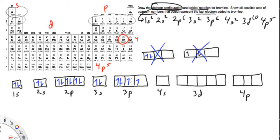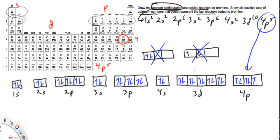Then we're going to go back and completely fill them. 4S gets completely filled because there's not enough energy to kick from 4S over to 3D. Then we fill in 3D — half filled with parallel spin, all going up — and then we fill them with the down arrow. In the case of 4P, we're going to have five electrons. That's going to be five on the fourth level, so 4P has five electrons because bromine has one, two, three, four, five on the fourth level in the P block.